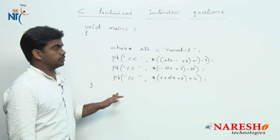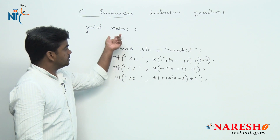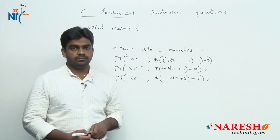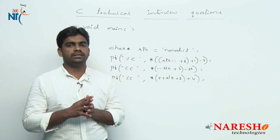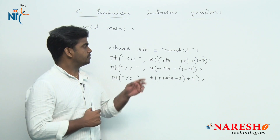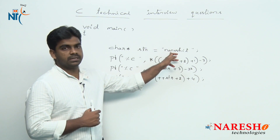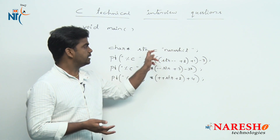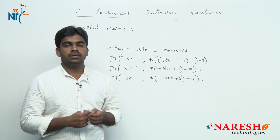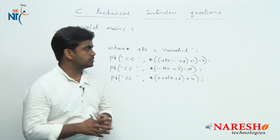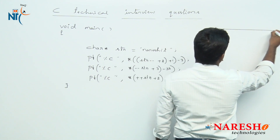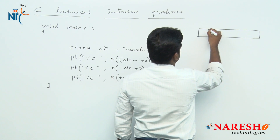Here in the main function they have given one string variable — a character pointer — which is nothing but a representation of a string. How it gets memory allocation is just like a character array, and the pointer variable holds the base address of the string.